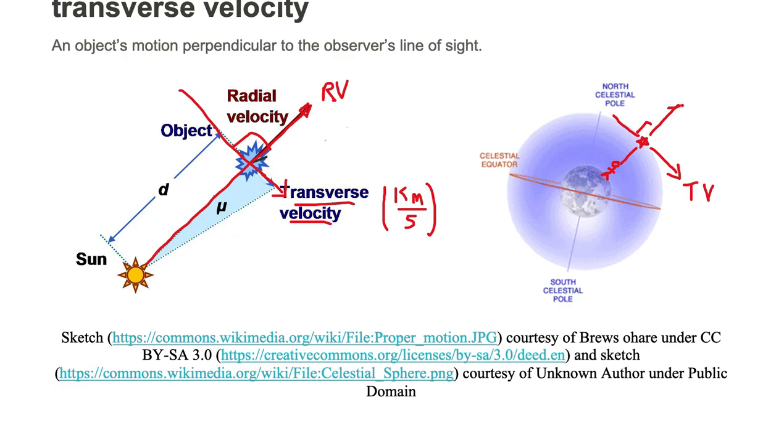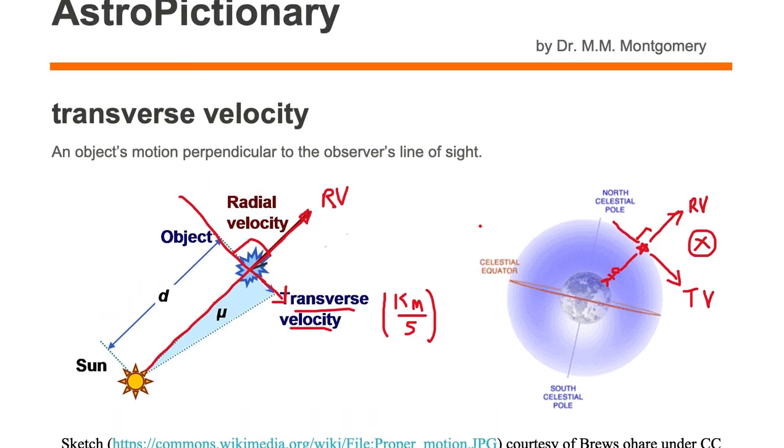The radial velocity is abbreviated RV. In this particular example, I have my object moving away and moving to the right, which I define as positive. So outward is positive, and to the right is positive.